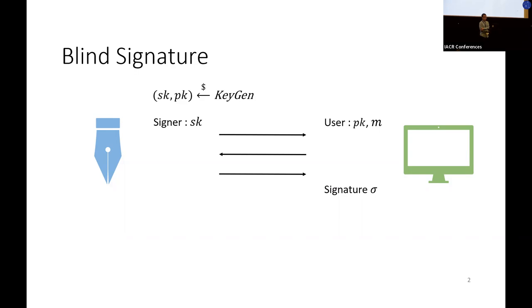The signature can be verified using the public key. On the other side we require the signer to be blind, which means the signer does not know the message during the interaction, and moreover even given the message and signature later, the signer cannot link them back to which session issued them.